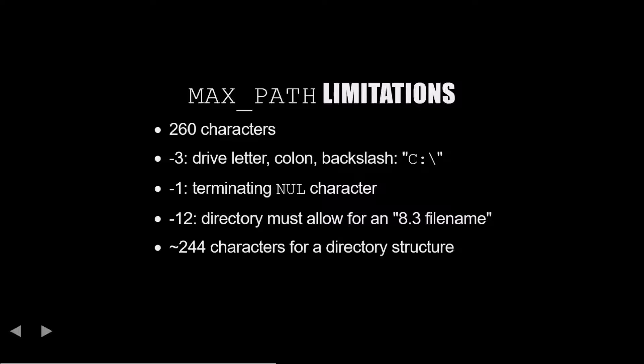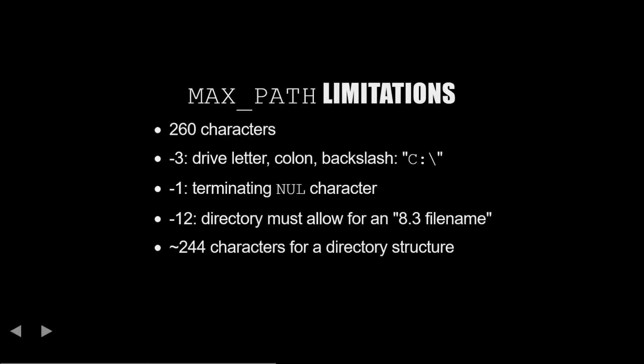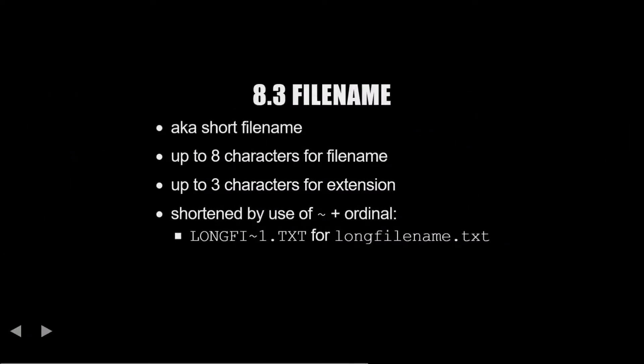Now wait a minute — what the heck is an 8.3 file name? Well, I'm glad you asked. An 8.3 file name, also known as a short file name, is a naming convention used to shorten file names — 8 being the name and 3 being the extension. Canonically it's uppercase, and when the name is too long it is shortened with a tilde and a number. These rarely come up in computing since the last release of MS-DOS was almost two decades ago.